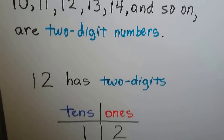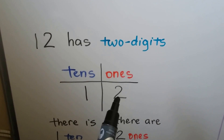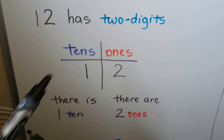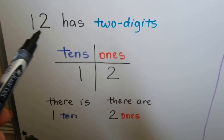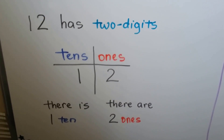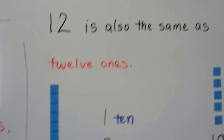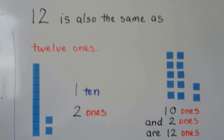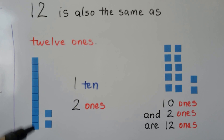12 has two digits. It has a 10 and two ones. There's one 10 and two ones — it's two digits, two place values. 12 is also the same as 12 ones. We can say it's one 10.